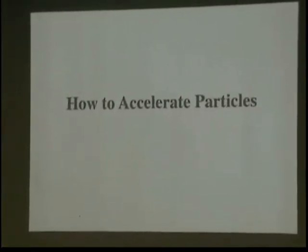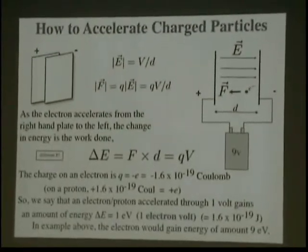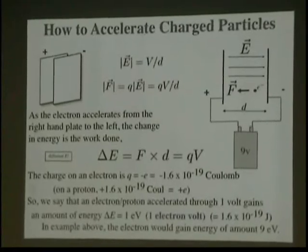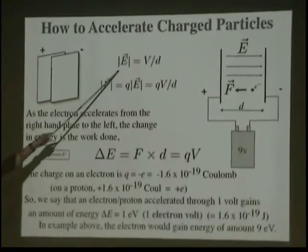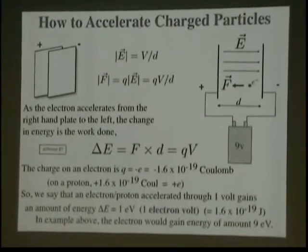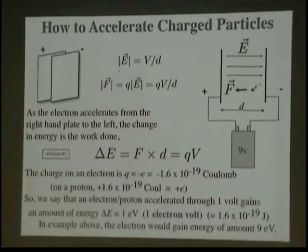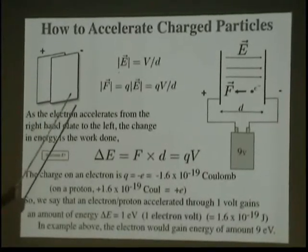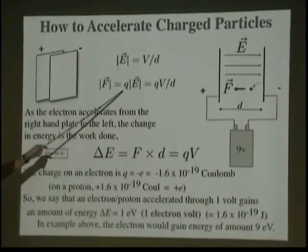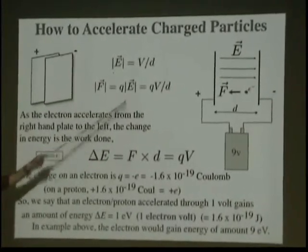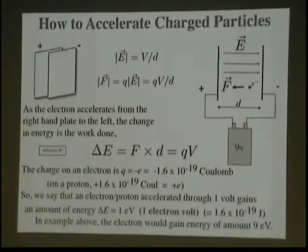We're going to talk about how we accelerate particles now. Let's imagine we have two plates of metal. One is charged positively, one is charged negatively. We have some voltage across them. And the electric field between those plates is proportional to the voltage divided by the distance between those two plates. You can imagine something sitting between there is going to have a force applied to it. And that force is proportional to the charge of whatever is in between those plates times the electric field. Or, using the equation above, it's the force times the voltage divided by the distance between the two.